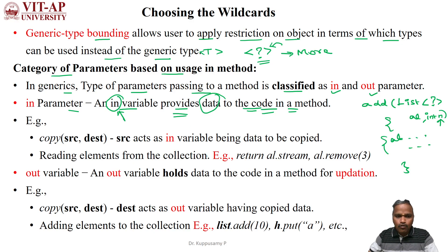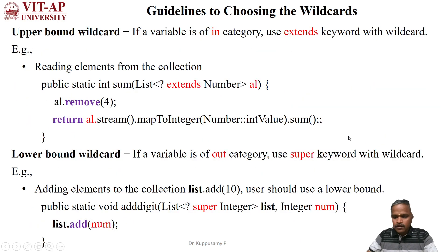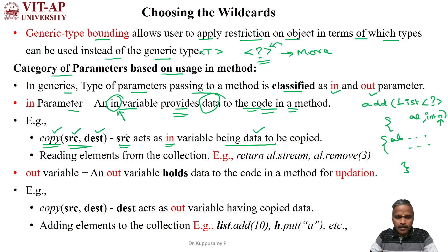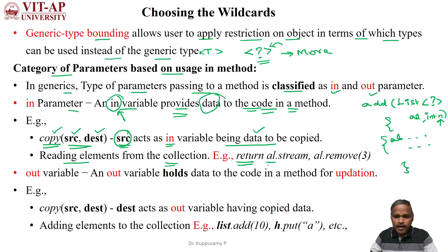For example, when you take the method 'copy', it has two arguments: source and destination. Here, source is acting as an 'in' category variable because it carries the data to be copied — the data being supplied to the code. Reading elements from a collection is also called an 'in' variable. For example, returning data using variable 'al', or using 'al' to remove data from the array list — 'al' is called an 'in' variable.